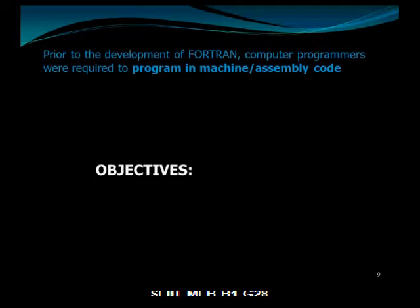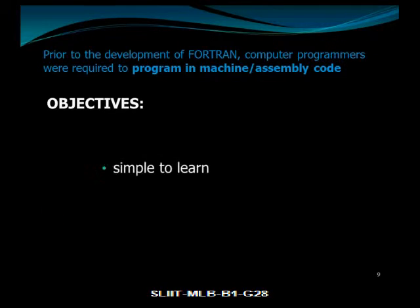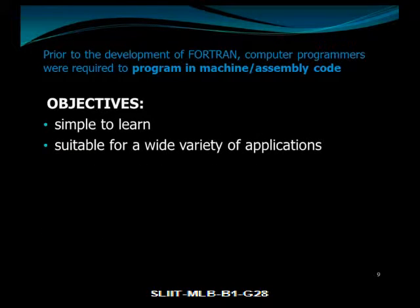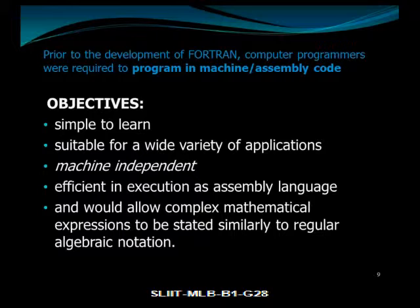Often referred to as a scientific language, Fortran was the first high-level language using the first compiler ever developed. Programming in machine or assembly code was an extremely difficult and time-consuming task, not to mention the dreadful chore of debugging the code. Prior to the development of Fortran, computer programmers were required to program in machine or assembly code. The objective was to create a programming language that would be simple to learn, suitable for a wide variety of applications, machine-independent, efficient in execution as assembly language, and would allow complex mathematical expressions to be stated similarly to regular algebraic notation.